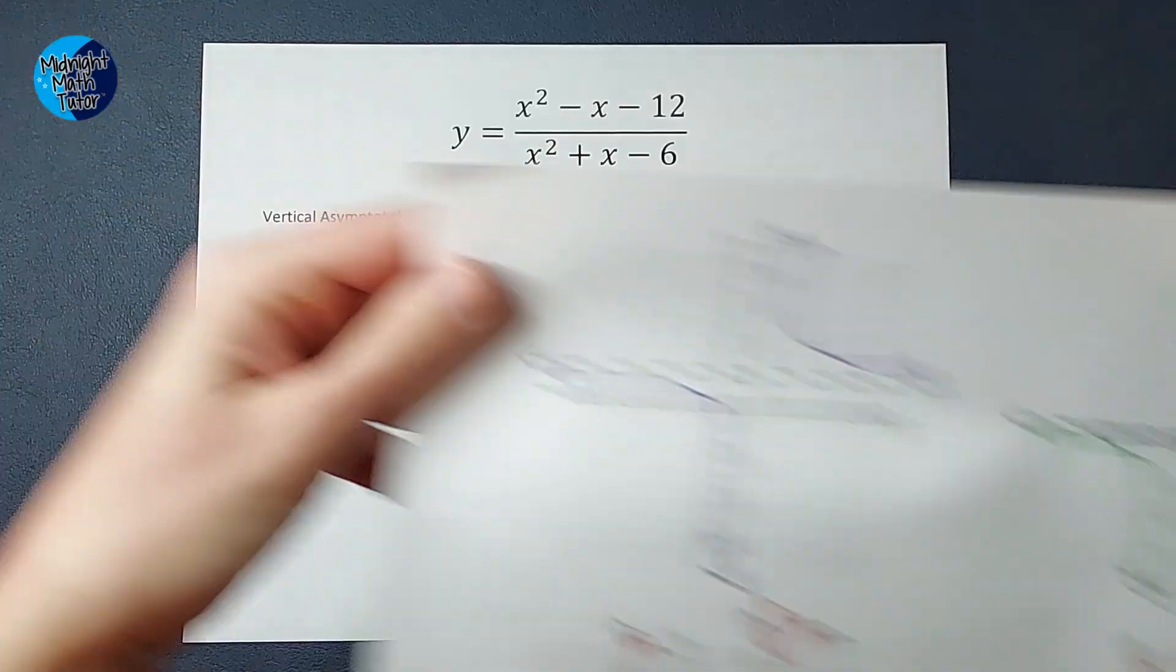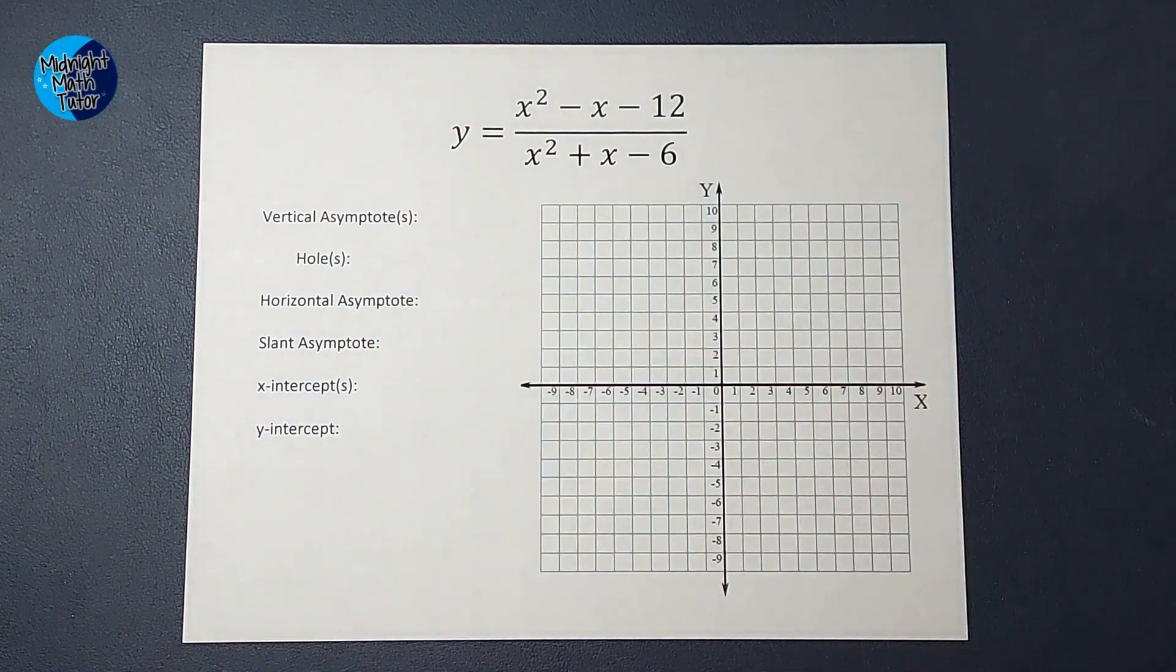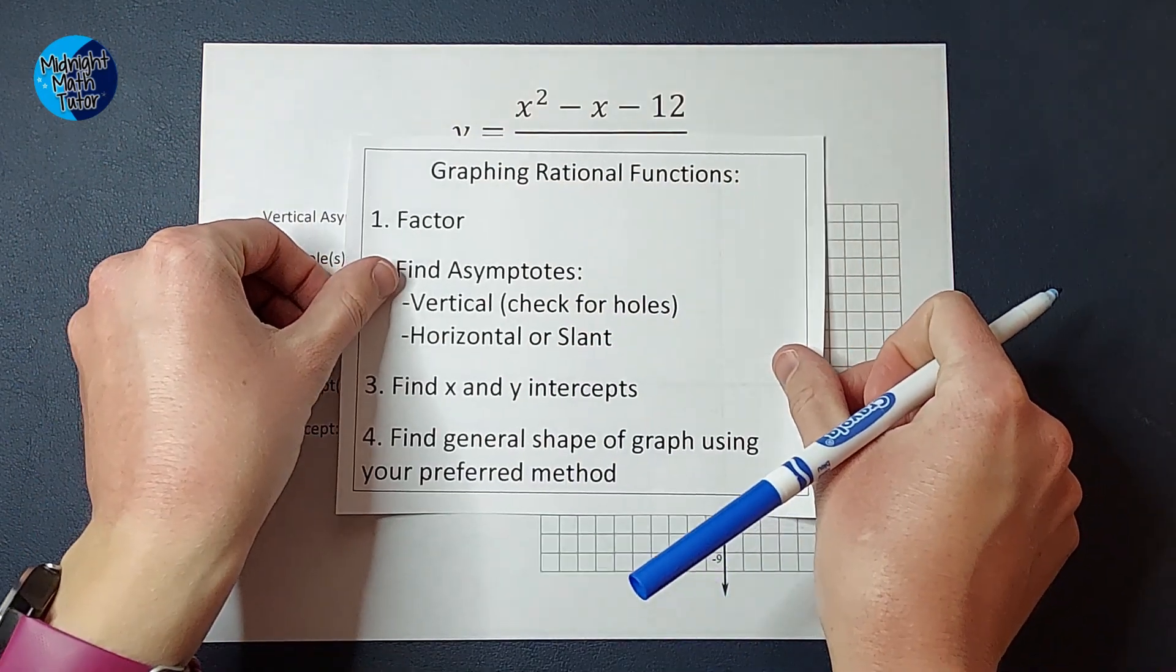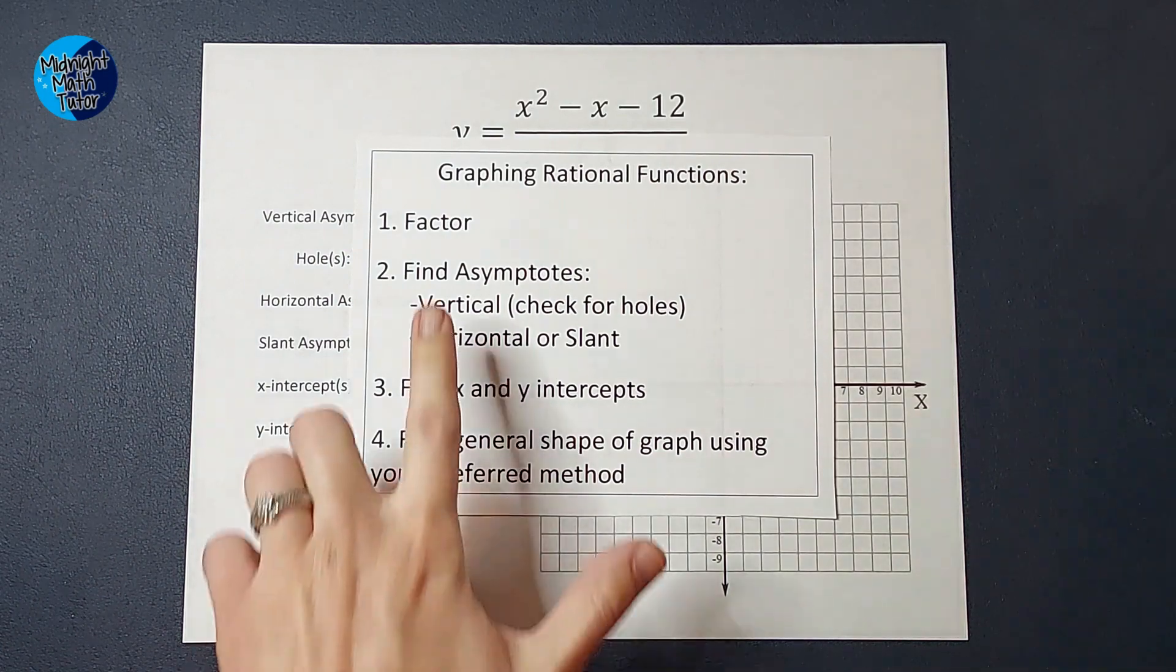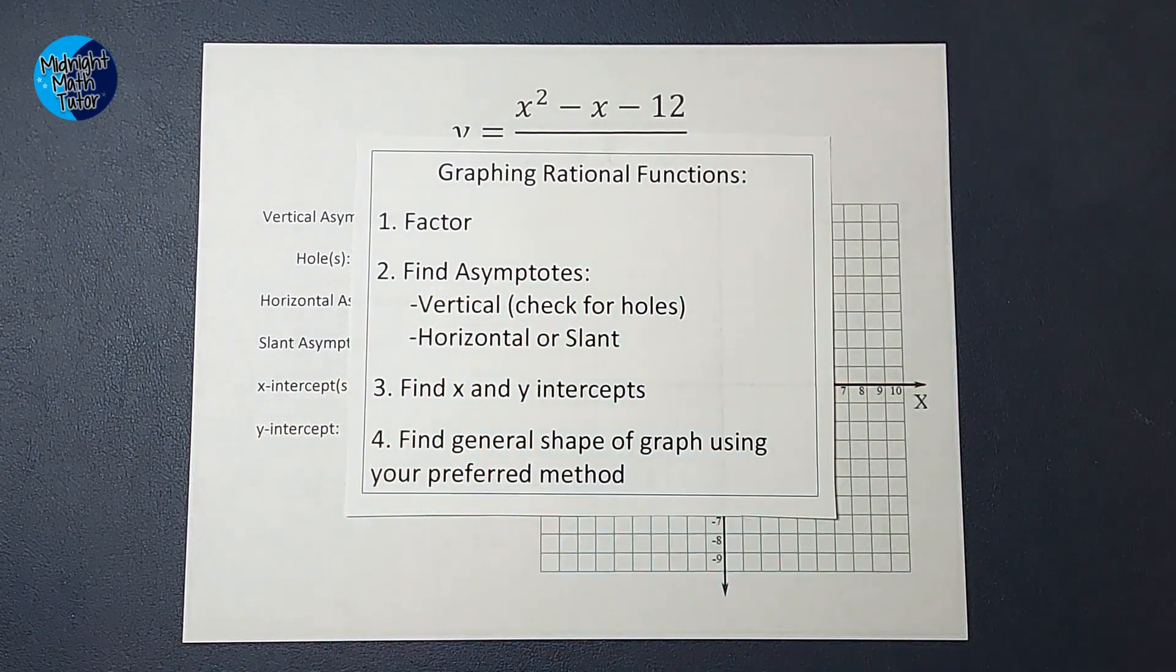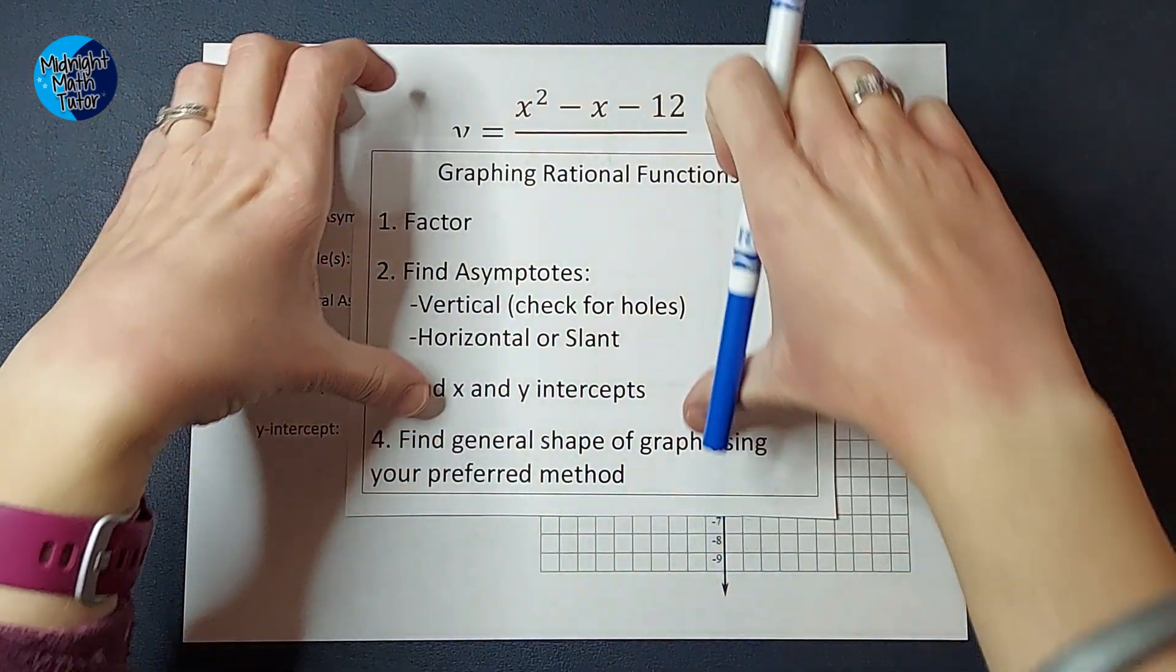So when we do these, we follow some steps. I love it when math gives us steps. First, we're going to factor. Second, we're going to find our asymptotes and check for holes. Then we're going to find our x and y intercepts. And then fourth, we are going to figure out the general shape of the graph using our preferred method, which we'll talk about once we get there.